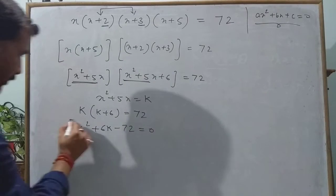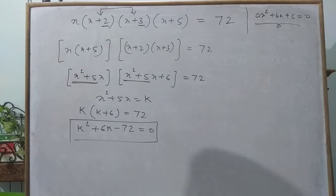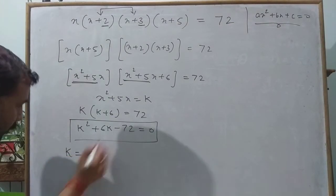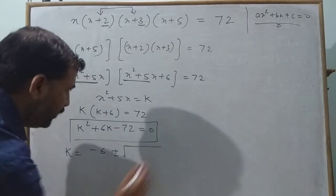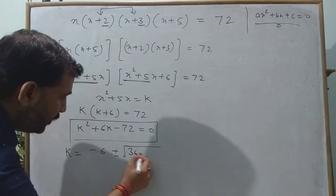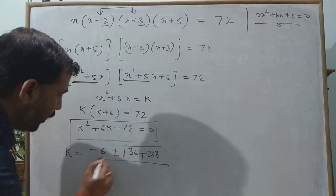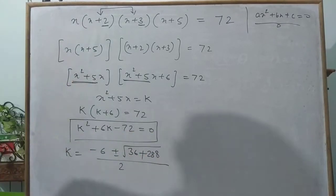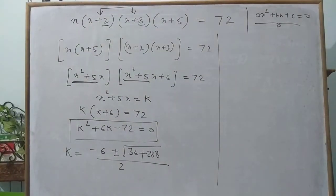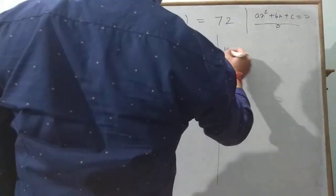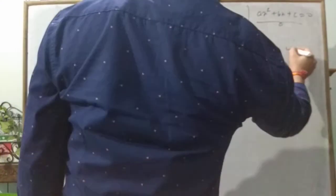Previously the quadratic equation was not apparent, but now after transformation it becomes a quadratic equation: k² + 6k − 72 = 0. We factorize this to get k = 6 and k = −12. Using the quadratic formula with b = 6 and discriminant = 36 + 288 = 324, so √324 = 18, giving k = (−6 ± 18)/2.